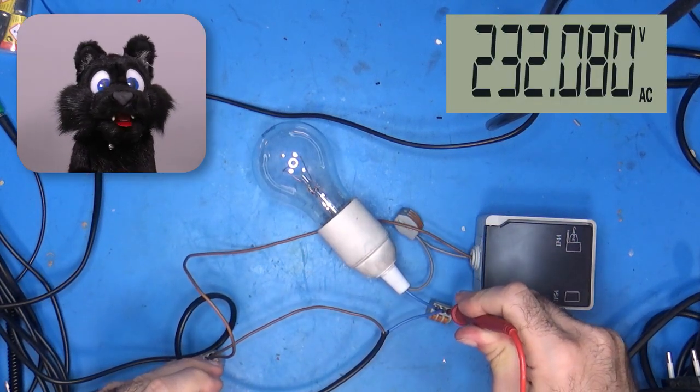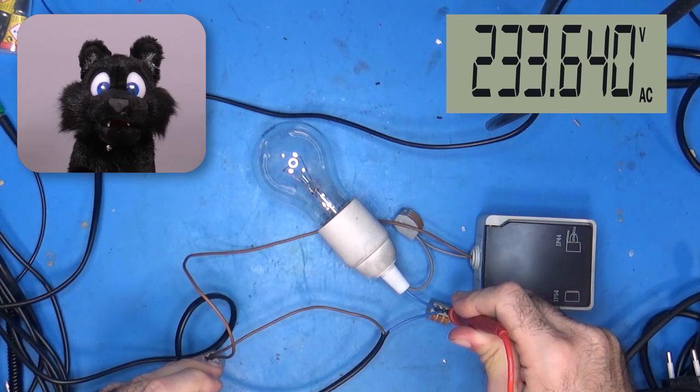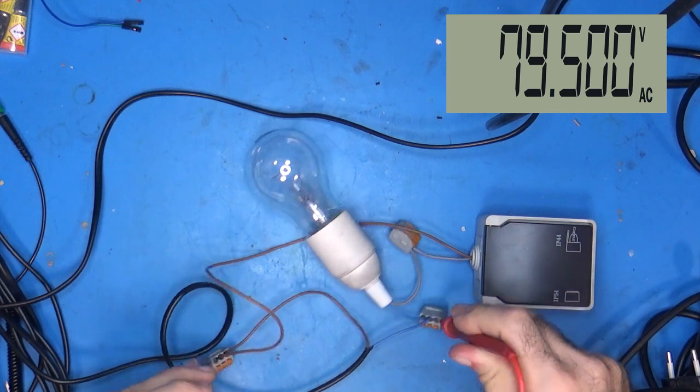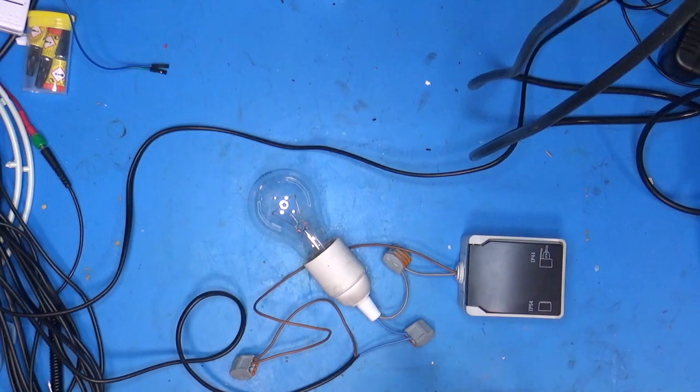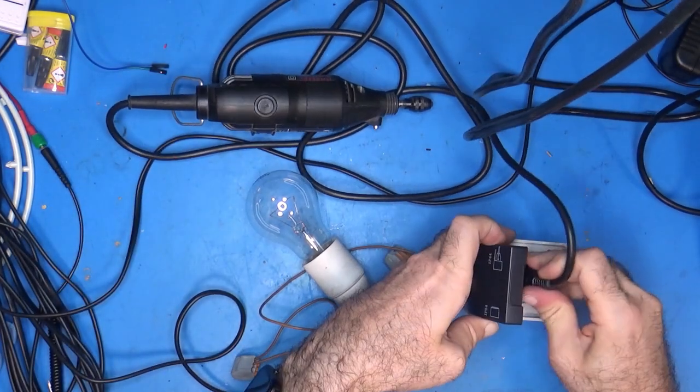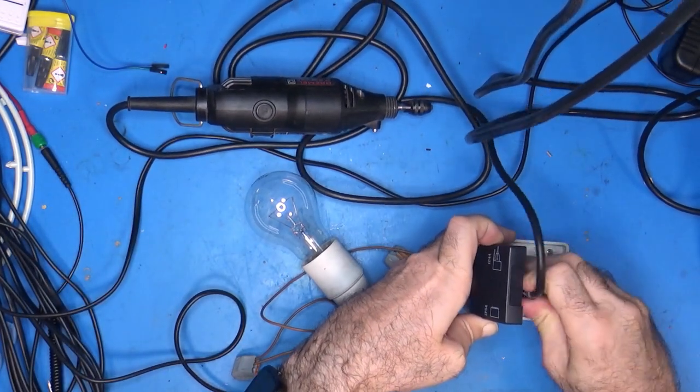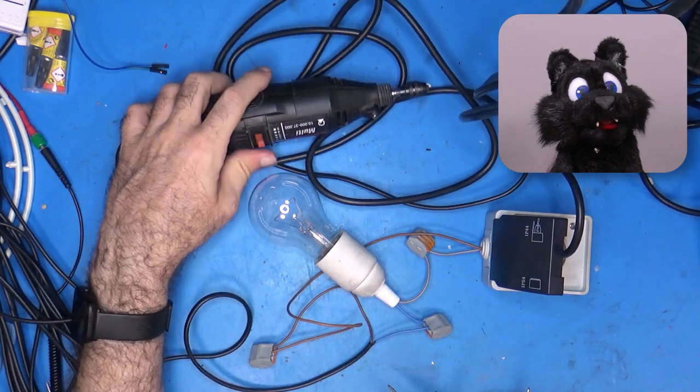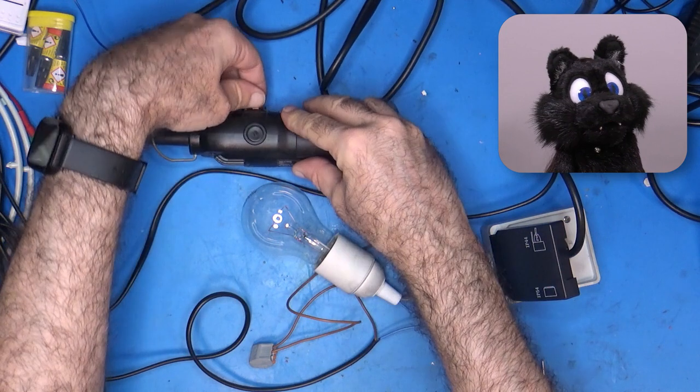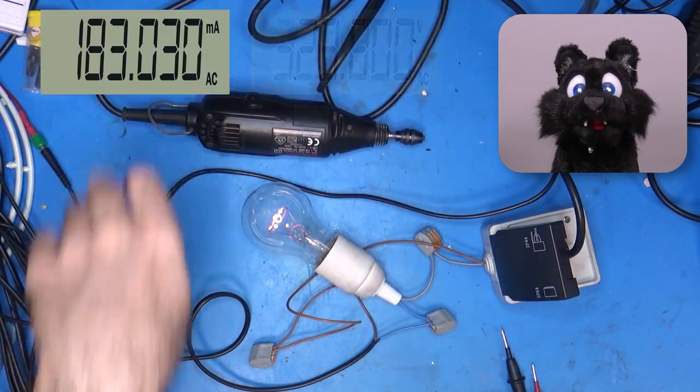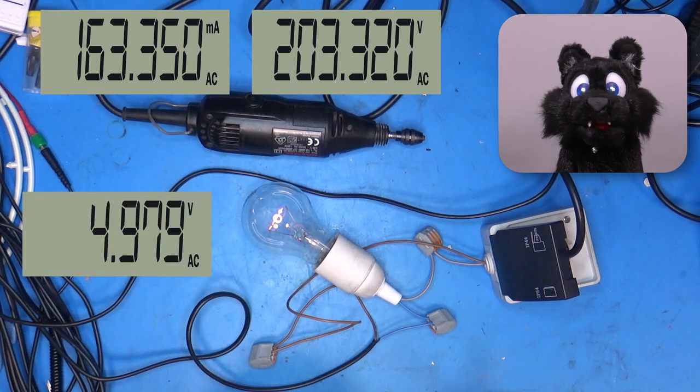Note that the input voltage is 233 volts. Regular mains around here. Once I turn on the Dremel, it draws about 160 milliamps for the motor. The voltage across it is at 220 volt. The bulb takes away 28 volt.